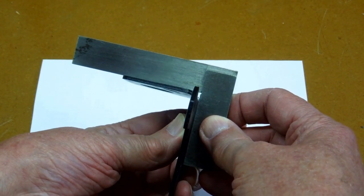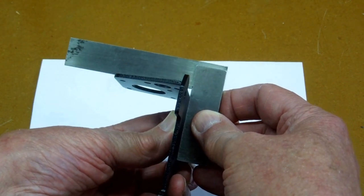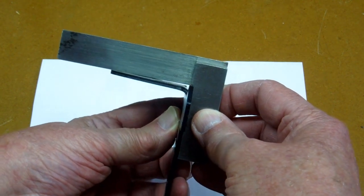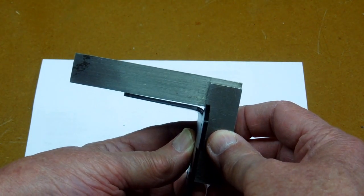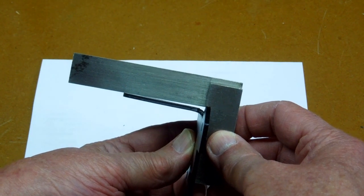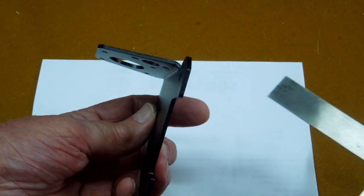I took the extruder and the X-axis carriage apart, put a square on here, and that is not square. You see a lot of light under there. I need to bend this down.